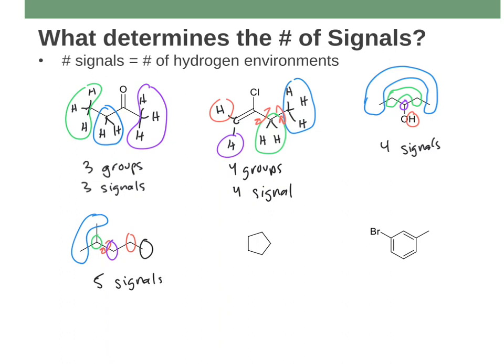Here's the cycloalkane. There is no difference between any of these hydrogens — they're all in CH2 groups, all in identical environments. If I said 'point to an H on a CH2,' that describes all of them. This would only give you one signal in NMR spectroscopy. There's a lot of symmetry here — environments are indistinguishable, meaning hydrogens in the same environment are indistinguishable from one another.